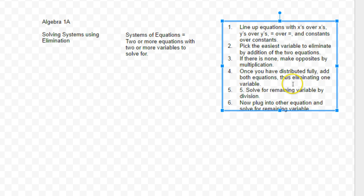Once you have distributed fully, add both equations, thus eliminate one variable. Step number five is solve for remaining variables by division, and then now plug into the other equation and solve for the remaining variable.